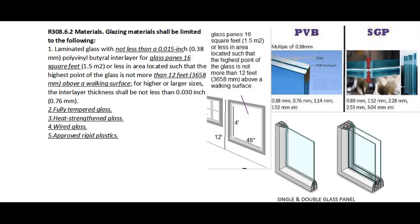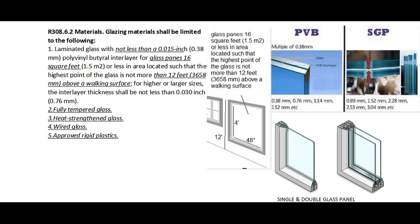R308.6.2 Materials: Glazing materials shall be limited to the following. 1. Laminated glass with not less than a 0.015-inch polyvinyl butyral interlayer for glass panes 16 square feet or less in area located such that the highest point of the glass is not more than 12 feet above the walking surface. For higher and larger sizes, the interlayer thickness shall not be less than 0.030 inch. 2. Fully tempered glass. 3. High-strengthened glass. 4. Wire glass. 5. Approved rigid plastics.